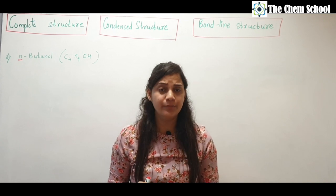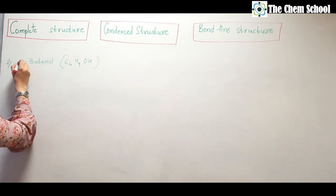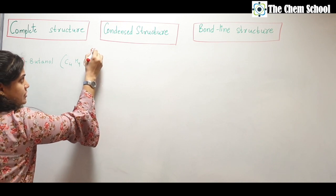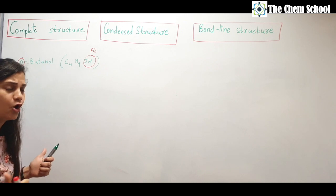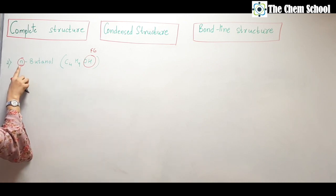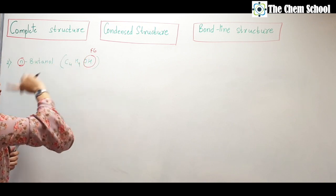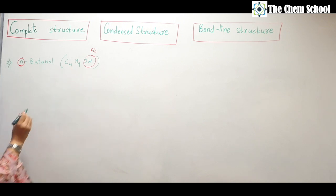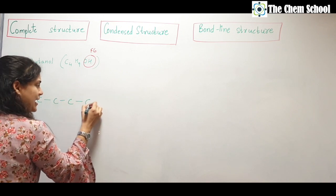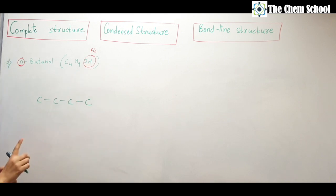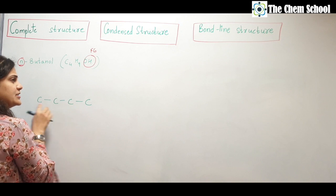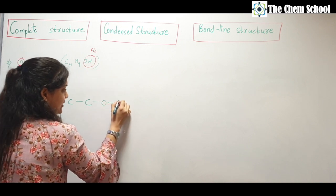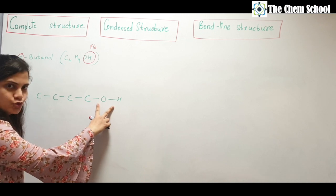Let's take the second example: n-butanol. The 'n' stands for normal — whenever we attach 'n', the functional group OH will go to the first or last carbon, always at the corner. Butanol has four carbons, so draw four carbons connected by single bonds, then attach the functional group OH to the first or last carbon.